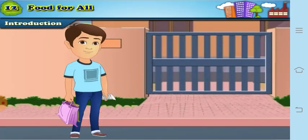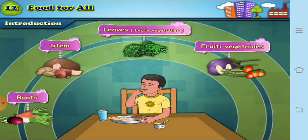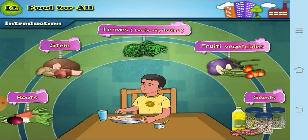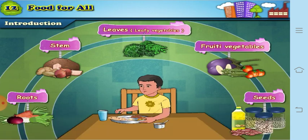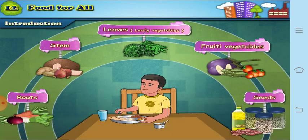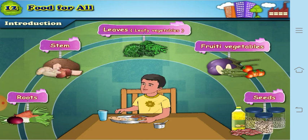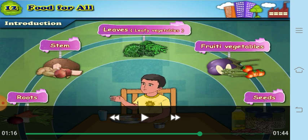In our daily meals we eat different types of roots, stems, leaves, fruity vegetables, and seeds. Roots we eat include carrot, radish, and beetroot. Stems we eat include onion, potato, and yam.